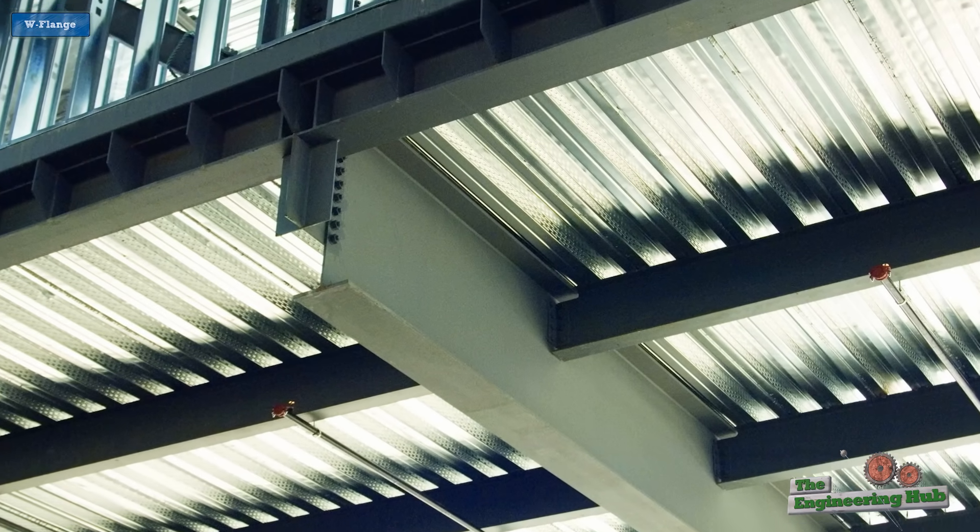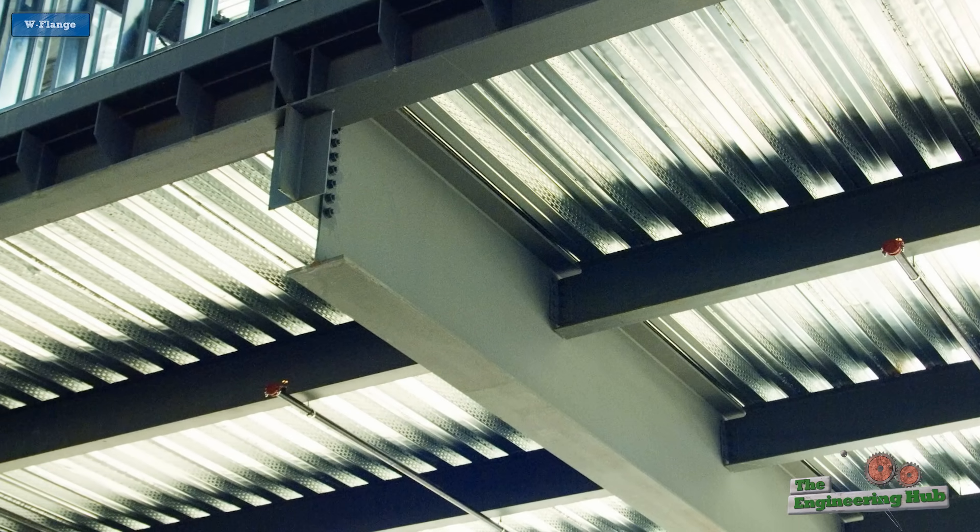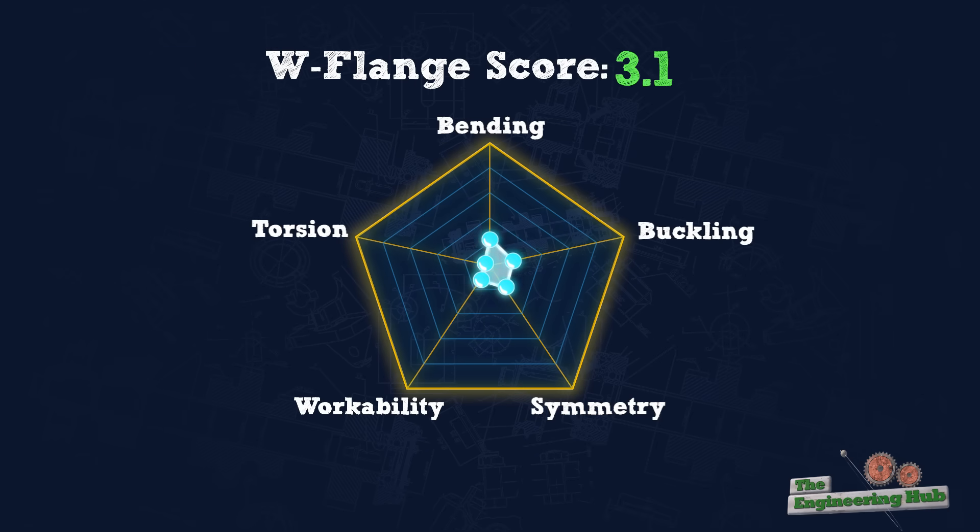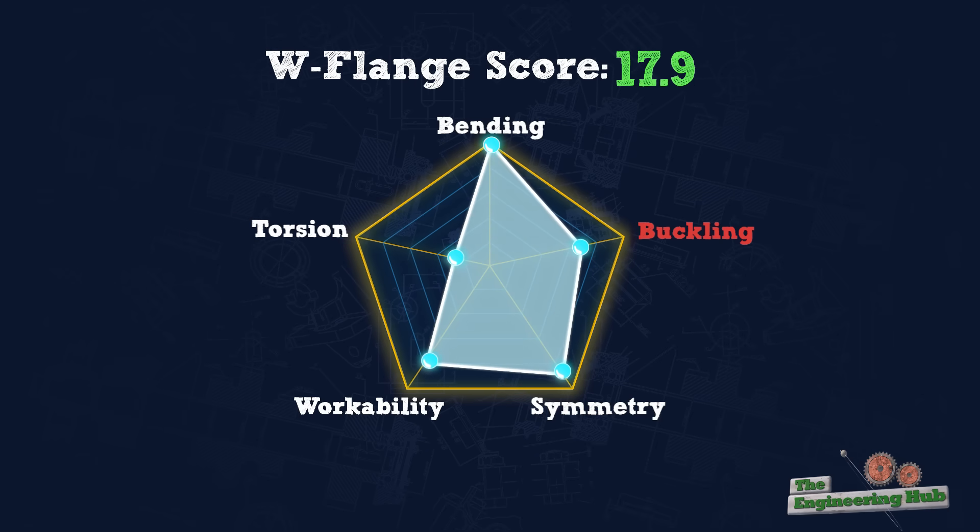The I-beam also has many sides and vertices, which adds manufacturing and construction complexity compared to say, rectangular sections. The I-beam score is lowest in torsion resistance, and also lowered in the buckling category due to the tendency for web or flange elements to be slender. Otherwise, the I-beam scores quite well in other categories. Let's see how the other shapes perform.